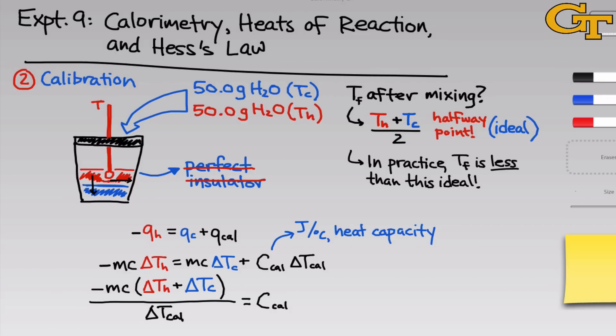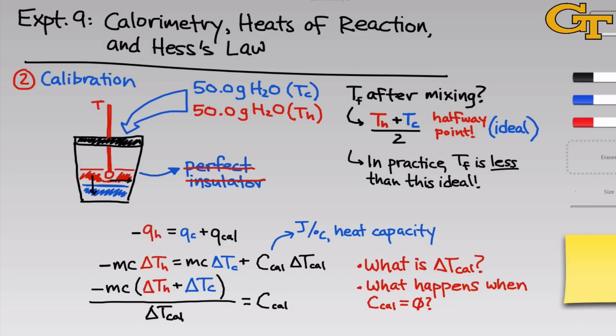A couple of things to think about during the calibration phase of this experiment. First, ask yourself: what is delta T Cal? Keep in mind that the calorimeter is in thermal equilibrium with the cold water at the start of the experiment, and at the end of the experiment the calorimeter is in thermal equilibrium with both components mixed — that will give you insight into the value for delta T Cal. Second, ask yourself what happens when the calorimeter constant is equal to zero, what situation that corresponds to, and how the equation simplifies to give a result that's fairly straightforward.